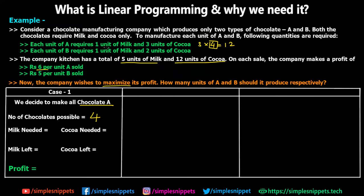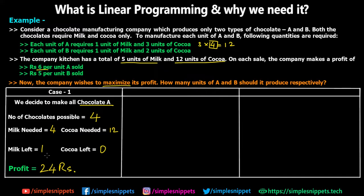For four units of chocolate A, we need four units of milk and twelve units of cocoa. We had five units of milk so one unit is left over, and all twelve units of cocoa are used. The profit for selling four units of chocolate A is six times four, which equals 24 rupees. So the company makes 24 rupees profit if it decides to make all chocolate A.